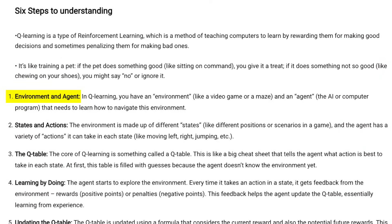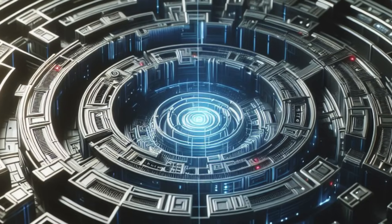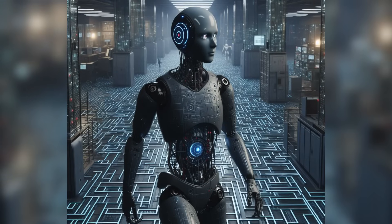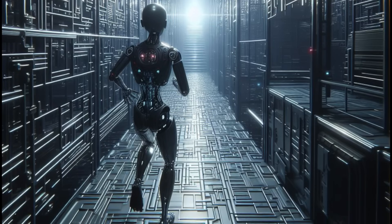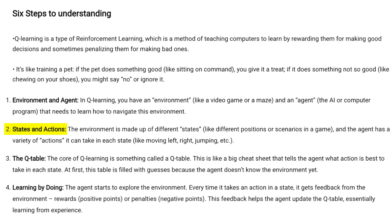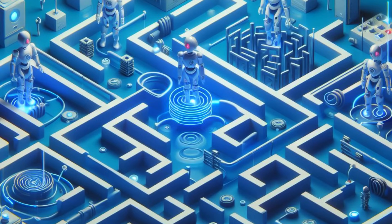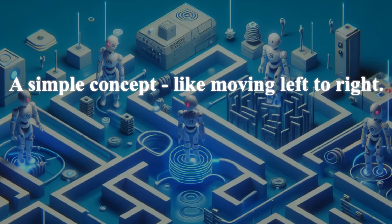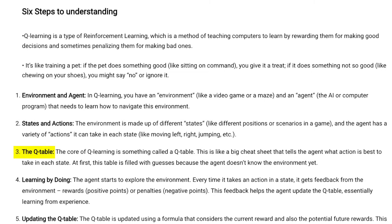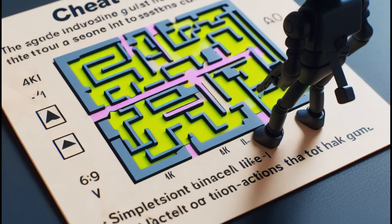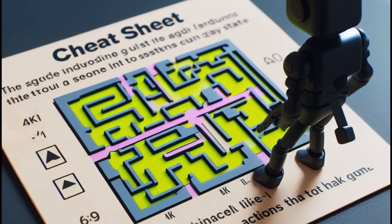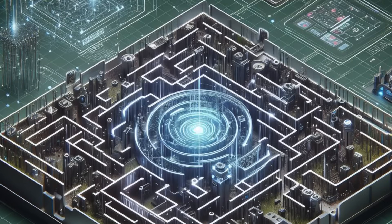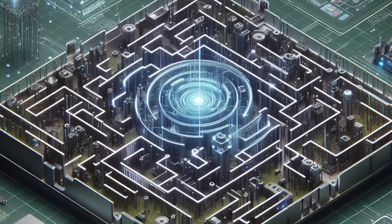Step one in Q-learning involves the environment and the agent. Imagine an environment — perhaps a video game or a maze — and an agent, the AI or computer program learning to navigate it. Step two: the environment is made up of different states and actions that the agent can take, a simple concept like moving left or right. Step three is the Q-table — like a cheat sheet guiding the agent on the best actions to take in each state, initially filled with guesses and evolving as the agent learns more.